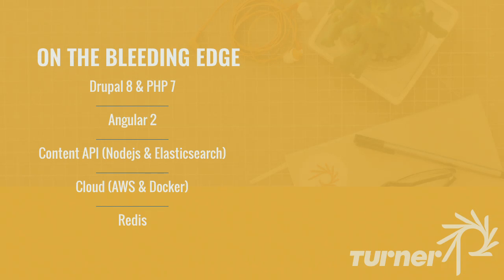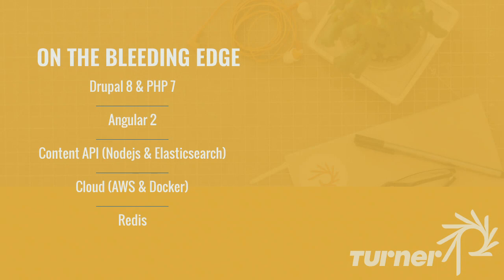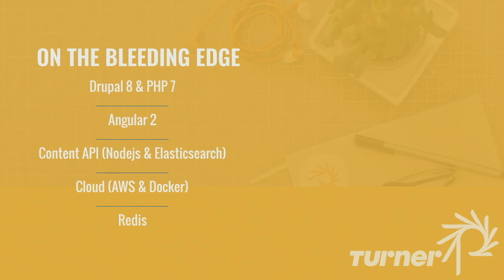We started developing NBA.com on Drupal 8 in late 2015, early 2016, and none of the technologies we wanted to use were actually done. Drupal wasn't even in alpha yet when we got started. PHP 7 was not quite out of the gate. Angular 2 was in alpha and had some big breaking changes after that. AWS wasn't playing great with Docker yet at the time, and the modules for Redis and some other things weren't ready for Drupal either. It was a very interesting world developing while all of the technologies we were building on were also being developed.